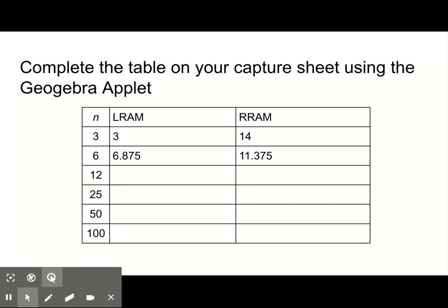Complete the table shown below on your capture sheet using the GeoGebra applet. Here is a question to think about: what do you notice about the rectangular approximations as n increases? Enter your answer in the first discussion board.